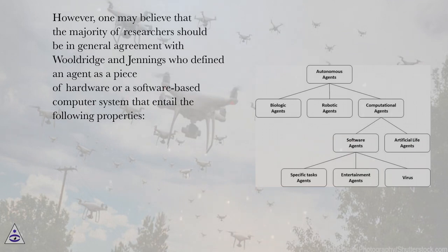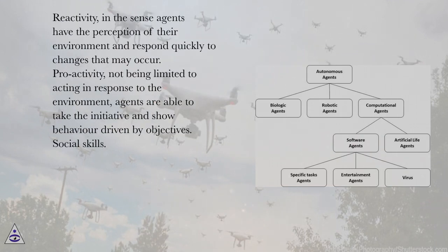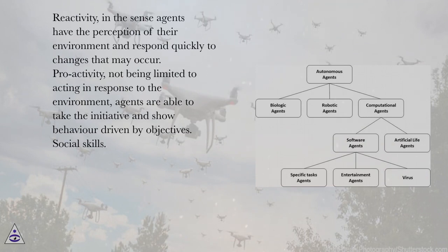However, one may believe that the majority of researchers should be in general agreement with Woolridge and Jennings, who defined an agent as a piece of hardware or a software-based computer system that entails the following properties. Reactivity: agents have the perception of their environment and respond quickly to changes that may occur. Proactivity: not being limited to acting in response to the environment, agents are able to take the initiative and show behavior driven by objectives.